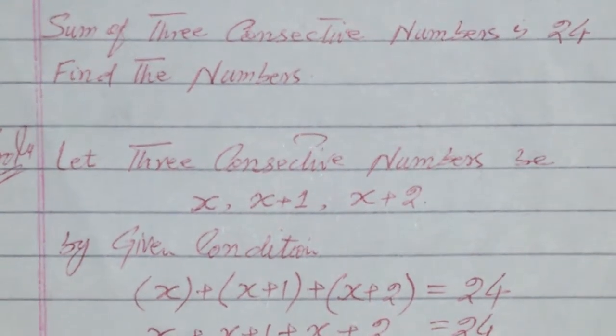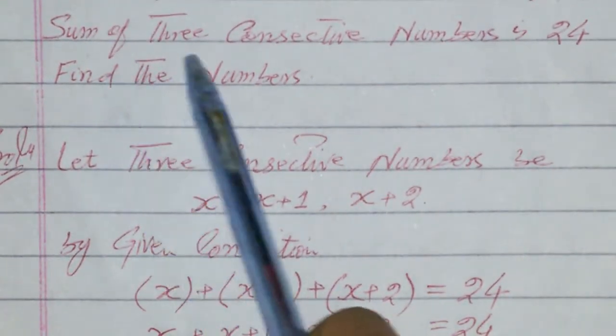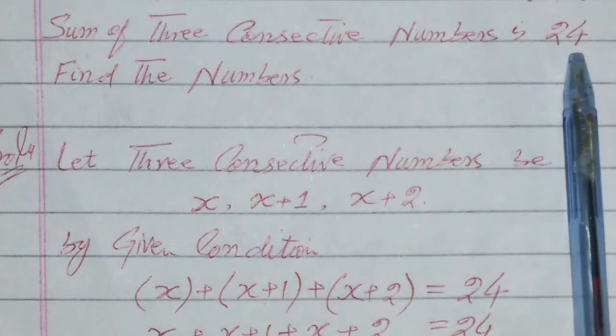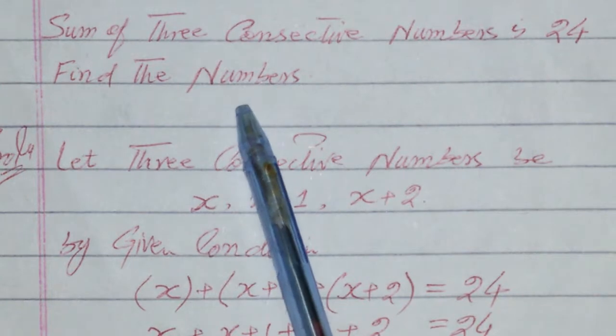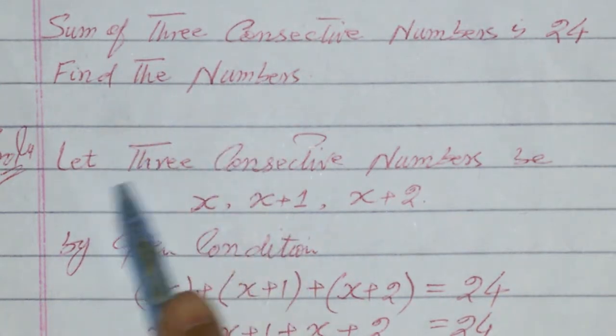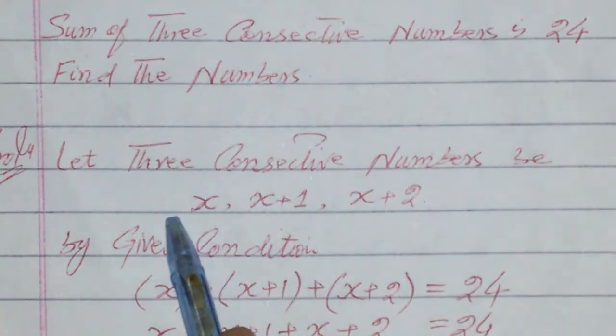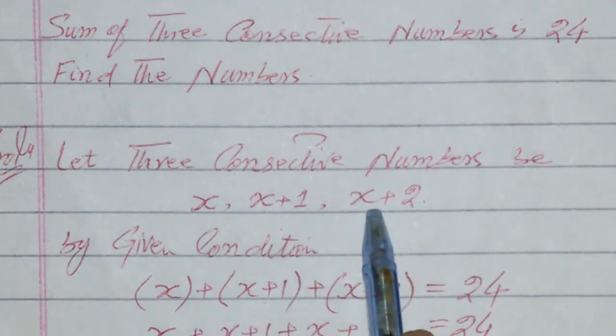Here's a question: The sum of three consecutive numbers is 24. Find the numbers. It's a very simple question. Let the three consecutive numbers be x, x+1, x+2.